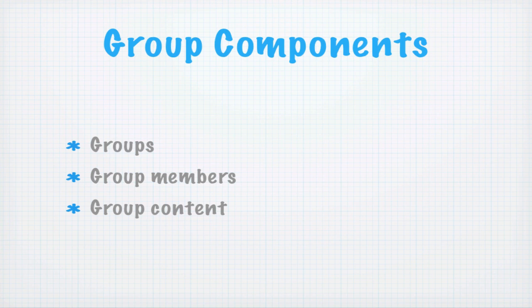A group has three components to it, basically. First of all, there's the group itself — something has to be designated as the thing that describes the group, such as a node with the group's name and description. Then there are members of the group, which are users on the Drupal site. They can become members either by subscribing or by being assigned to the group. And then we have group content — that's the information that belongs to the group, such as articles posted into groups.